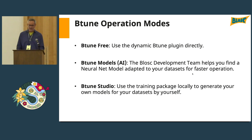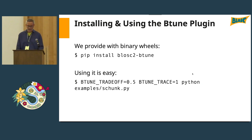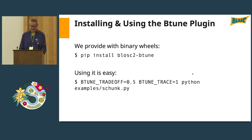There are three different operation modes in BTune. BTune Free uses the dynamic BTune plugin directly. BTune Models uses artificial intelligence — the BLOSC development team trains a neural network model adapted to your dataset for faster operation. BTune Studio lets users run the training package locally to generate their own models for their data. Installing the BTune plugin is very easy: just run pip install blosc2-btune, and that's all.